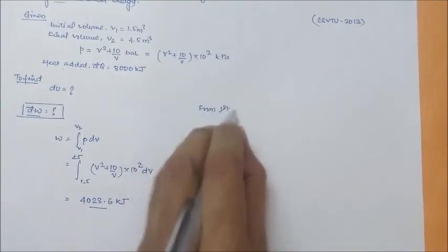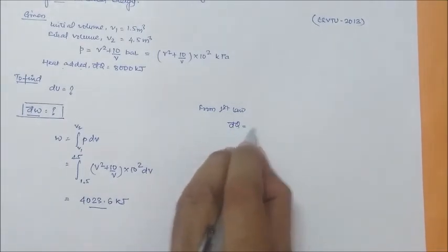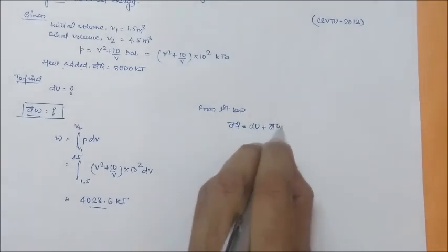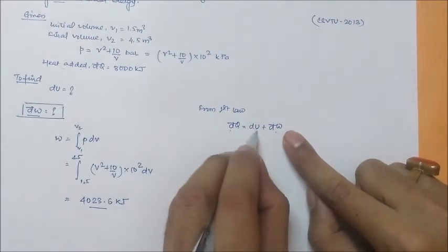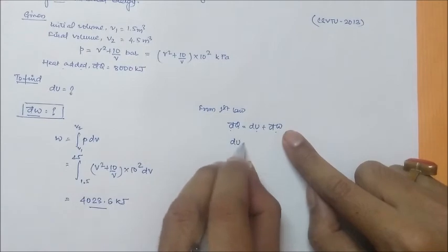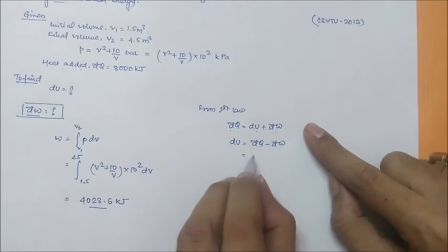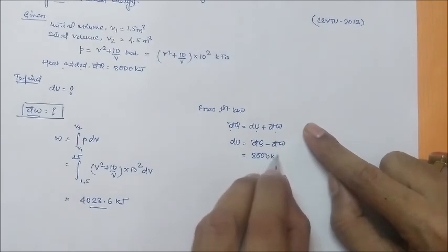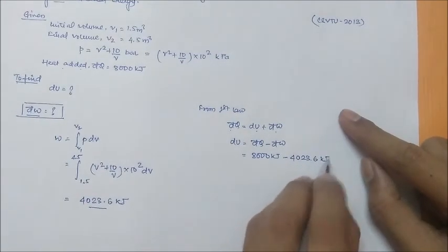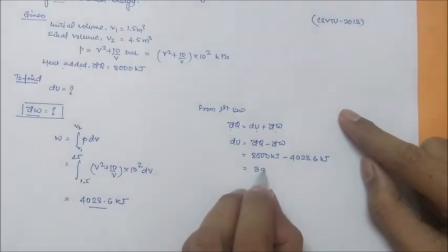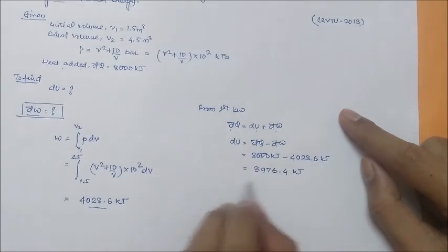From the first law, δQ equals dU plus δW, where δW is the closed system work and δQ is the heat transfer. So dU equals δQ minus δW, or 8000 kilojoules minus 4023.6 kilojoules, which equals 3976.4 kilojoules.